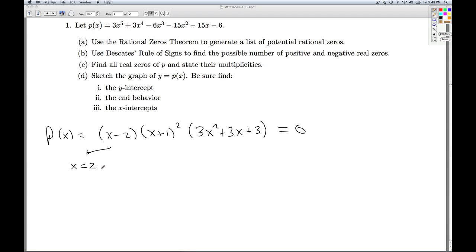And we get x equals 2, we get x equals negative 1, and then from here we get 3x² + 3x + 3 = 0. To solve this, I can divide both sides by 3 or factor the 3 out. Use the quadratic formula on this guy. If I check the discriminant, b² - 4ac, a, b, and c are all 1. So I get 1 - 4, I get negative 3, which is less than 0, which means I get no real zeros out of this.